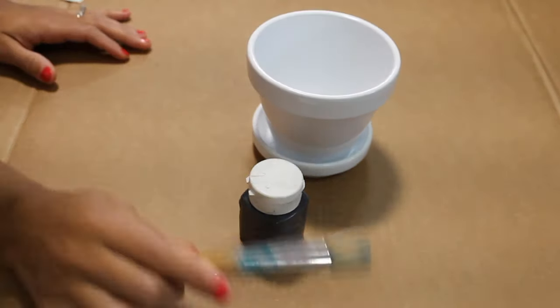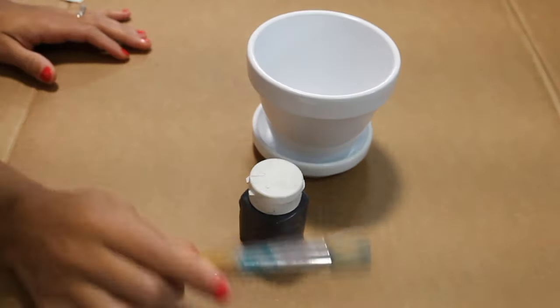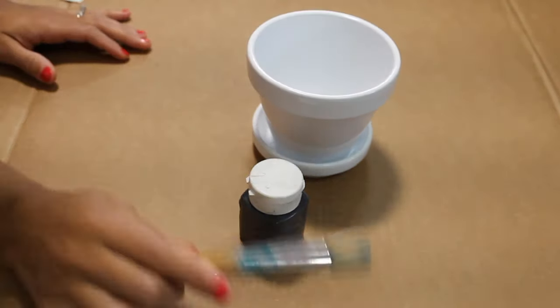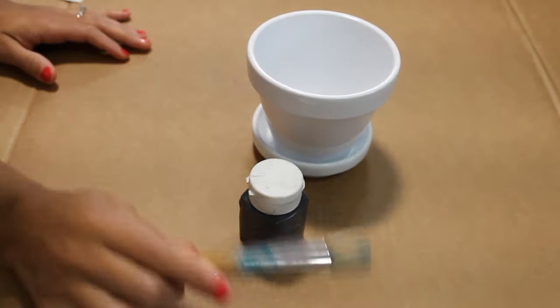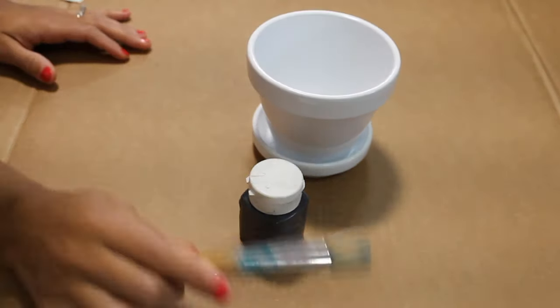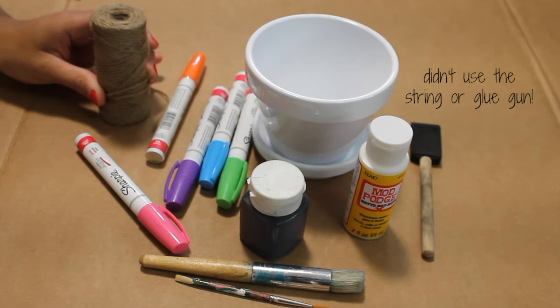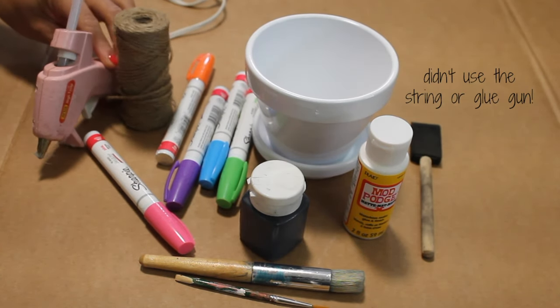So what you will need is a pot, a flower pot. This one right here was only three dollars. Then I also had the base for it as well, which came with it, which is so cute. And I liked it white because pretty much I'm able to do whatever the heck I want to do on it.